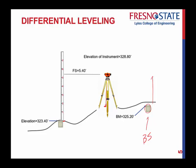The key things to know: a back sight is always a plus — you add the back sight reading to the known benchmark elevation to get your instrument height. A foresight is always a minus — you subtract the foresight reading from the instrument height to get the new elevation. So you add the back sight to the benchmark, transfer that elevation, then subtract the foresight to get down to the new elevation.